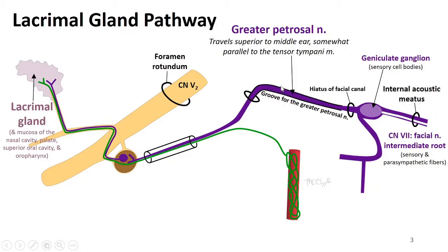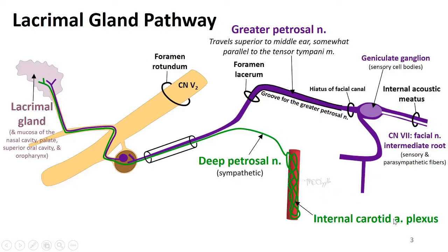We'll find that the greater petrosal nerve somewhat parallels the location of the tensor tympani muscle. Following the groove for the petrosal nerve, it then enters a foramen — the foramen lacerum. As soon as it enters the foramen lacerum, it joins up with other fibers. These are preganglionic parasympathetic fibers coursing to join up with sympathetic fibers from the internal carotid artery plexus, which come off as the deep petrosal nerve.